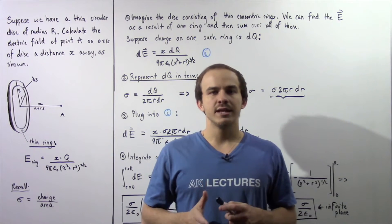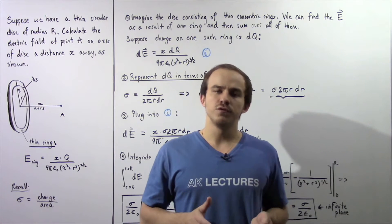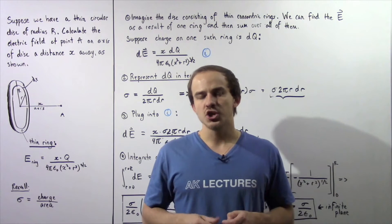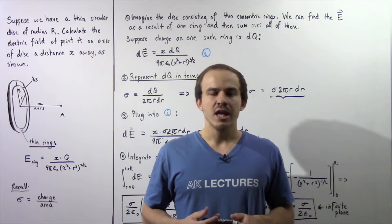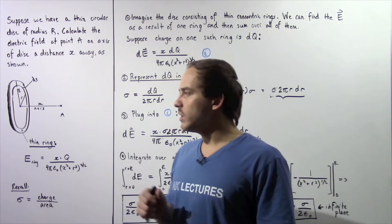In this lecture, we're going to calculate the electric field as a result of a disk that has uniform and continuous charge. And then we're going to use that result to calculate the electric field as a result of an infinite plane.